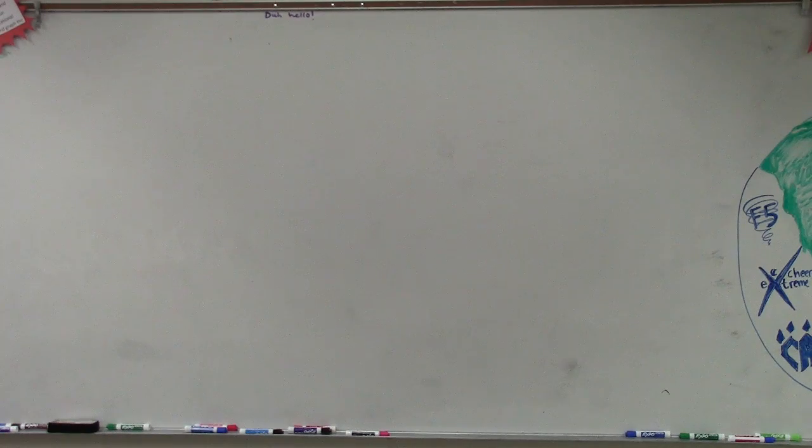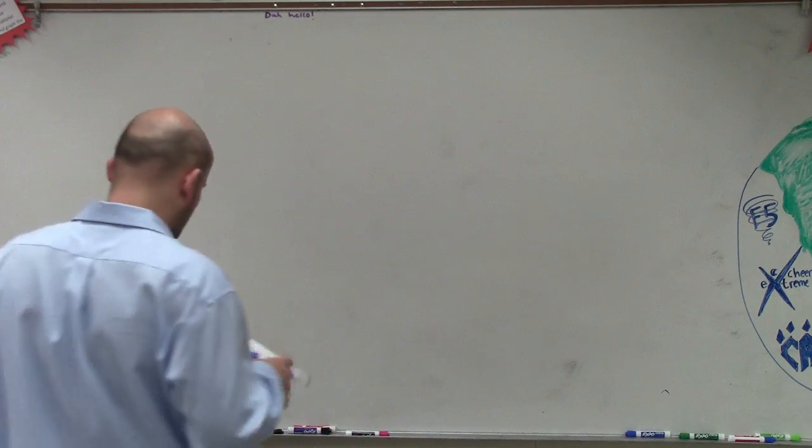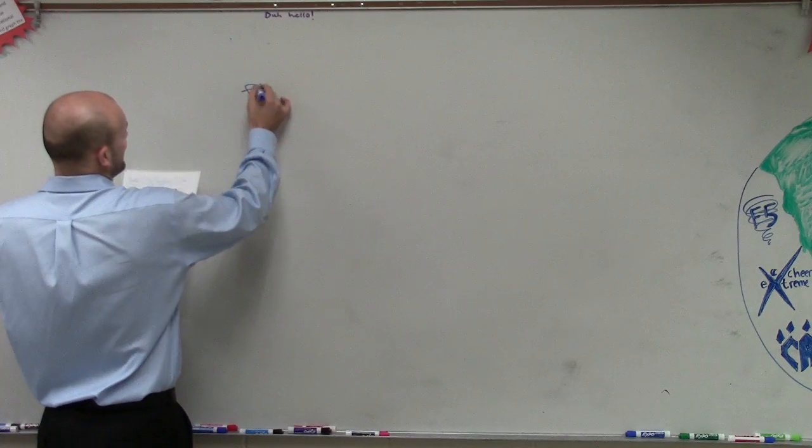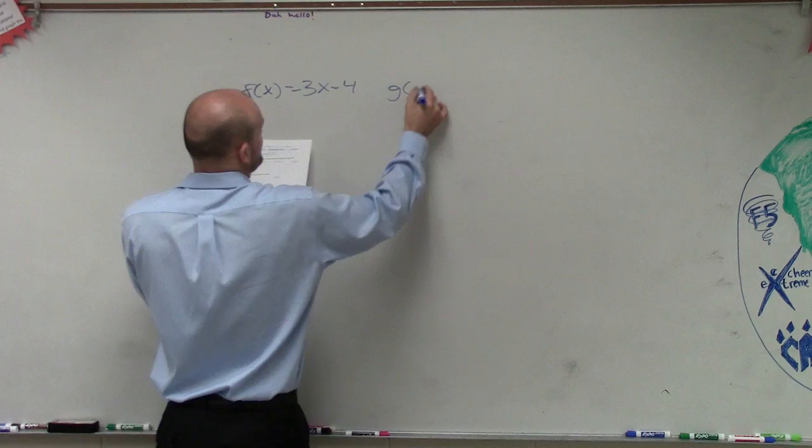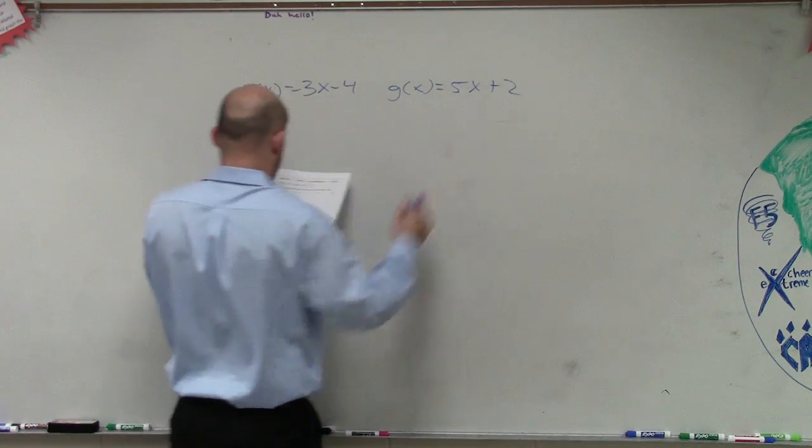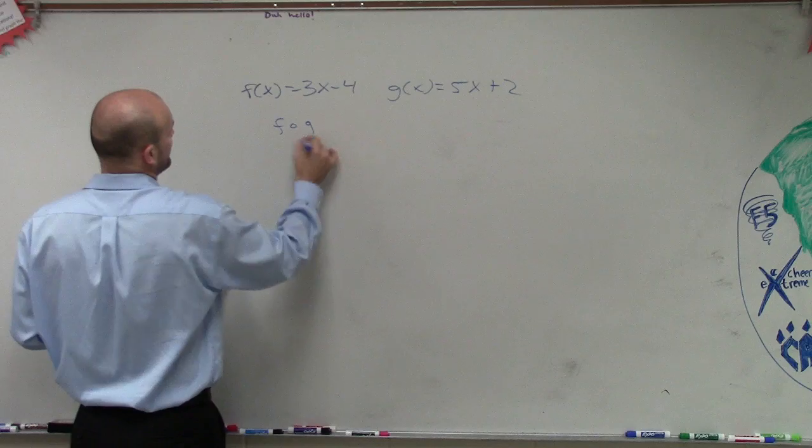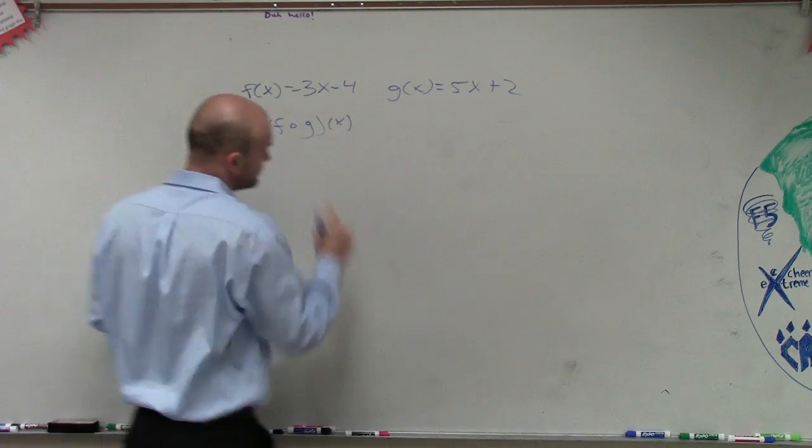All right, so let's look at number five here real quick. I'll try to help you guys out as best I can. So it says f of x equals 3x minus 4, and g of x equals 5x plus 2. And what they're asking us to do is f of g of x.